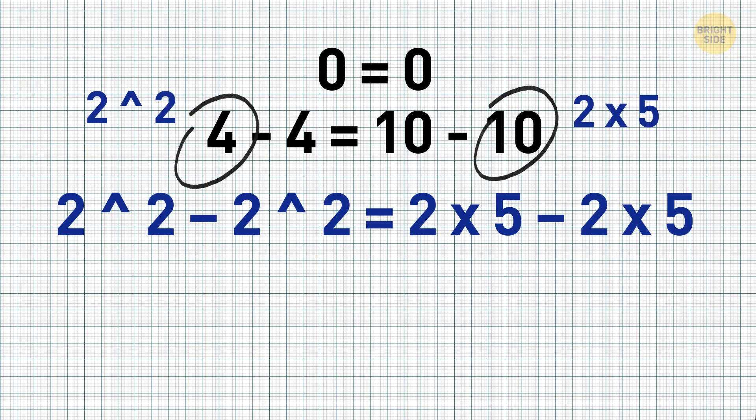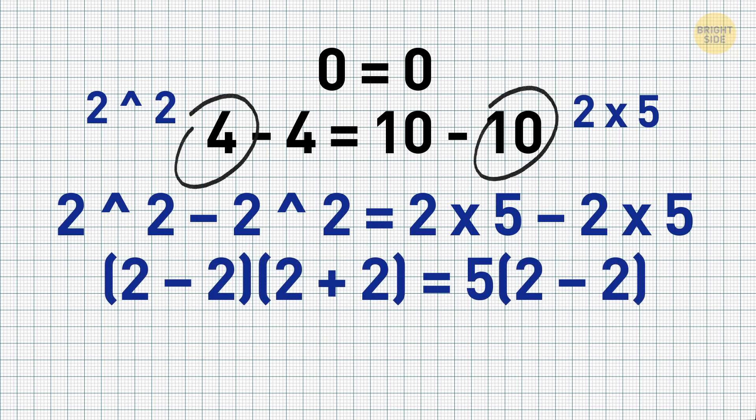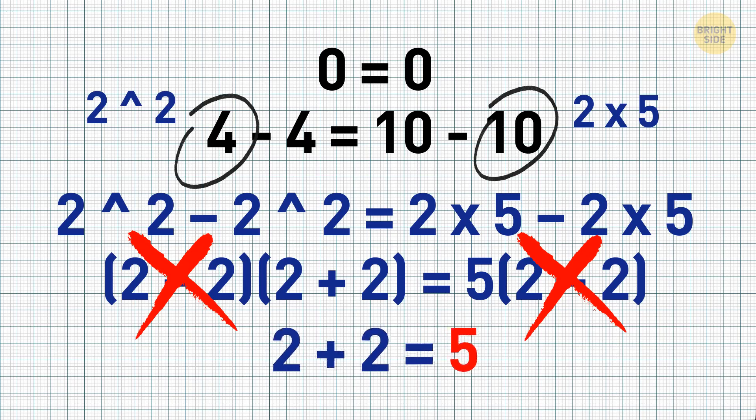Next, in math terms, we can simplify it by using brackets. And here's what we get: 2 minus 2 times 2 plus 2 equals 5 times 2 minus 2. Again, according to the rules of math, we can cancel 2 minus 2 on both sides. And the result will be 2 plus 2 equals 5.